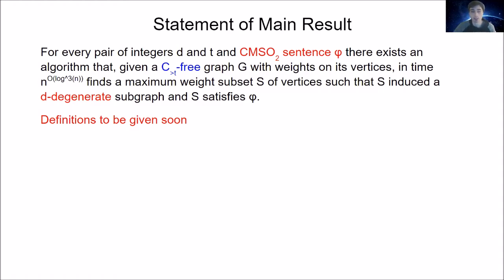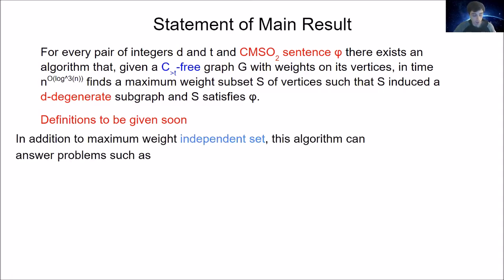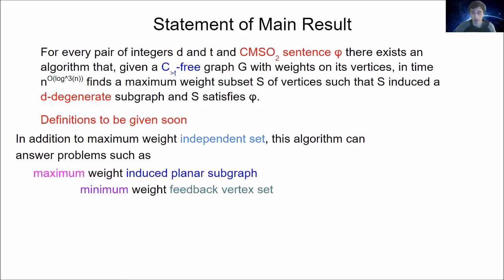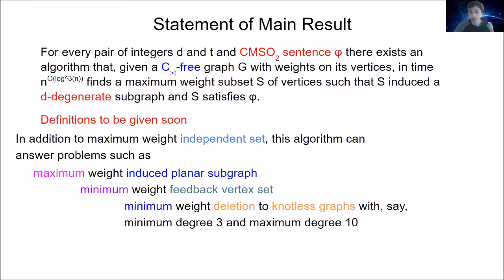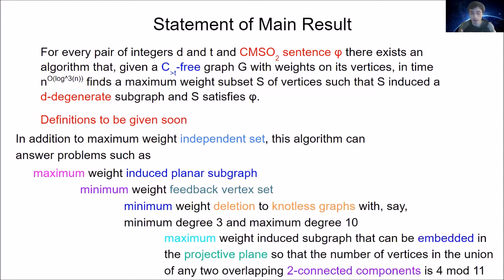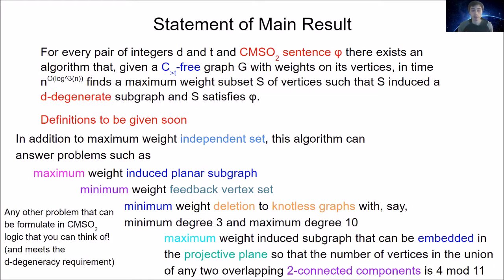In addition to maximum weight independent set, this algorithm can answer problems like maximum weight induced planar subgraph, minimum weight feedback vertex set, or minimum deletion to graphs with minimum degree 3 and maximum degree 10. To give a flavor of how strong CMSO₂ logic can be, this algorithm can answer a problem like: maximum weight induced subgraph that can be embedded in the projective plane such that the number of vertices in the union of any two overlapping 2-connected components is 4 mod 11.